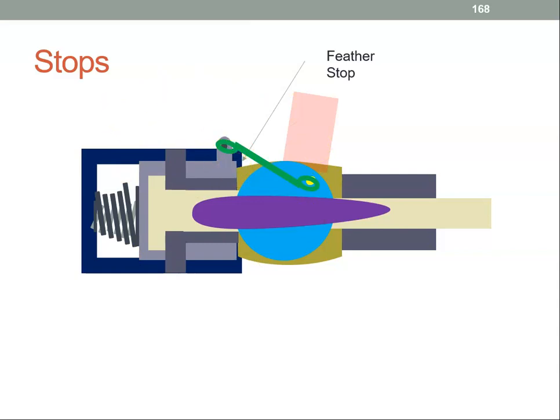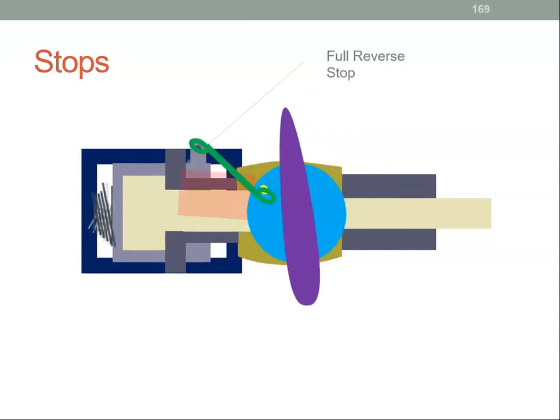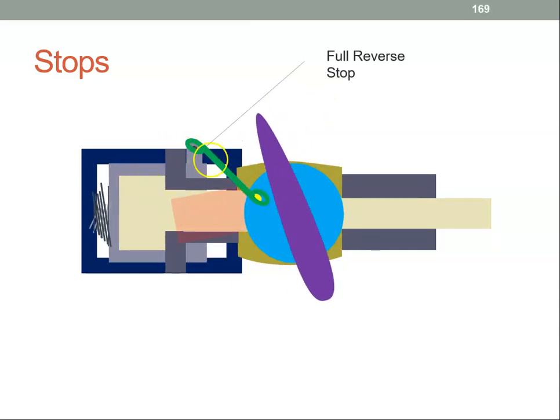And then the opposite would be the reverse stop. The propeller moves forward and it keeps going until it hits this stop. This is the full reverse stop.